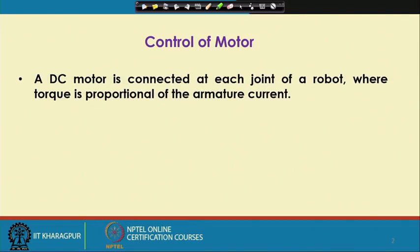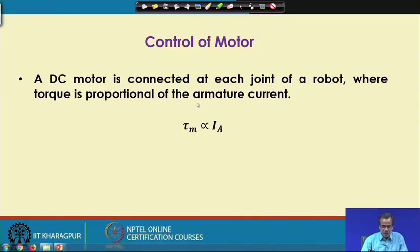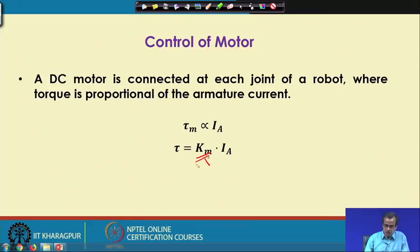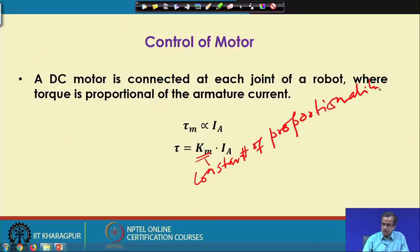We generally use the DC motor, which is connected at each of the robotic joint, and here the torque generated is proportional to the armature current. The motor torque is denoted by tau_m and the armature current is Ia. So tau_m is proportional to Ia, and this can be written as tau equals Km multiplied by Ia. This Km is the constant of proportionality, also known as the motor constant.